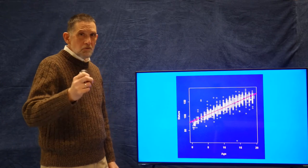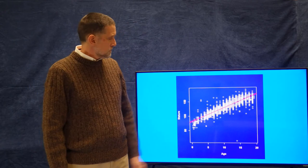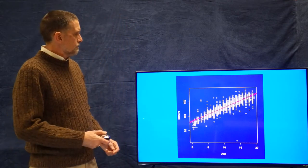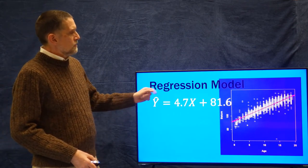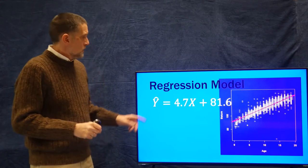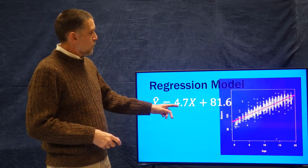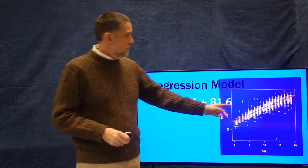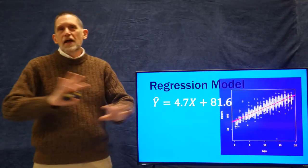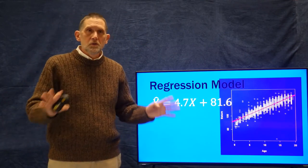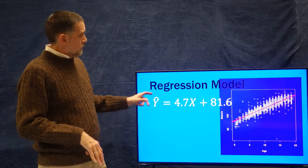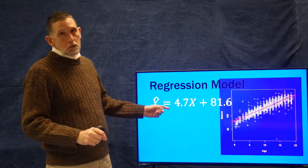So the regression model in this case is: y-hat equals 4.7x plus 81.6. I get that by doing a regression analysis — a calculation we'll get into when we use R. The predictive value of y is equal to 4.7 (the beta coefficient) times x, plus the constant 81.6.